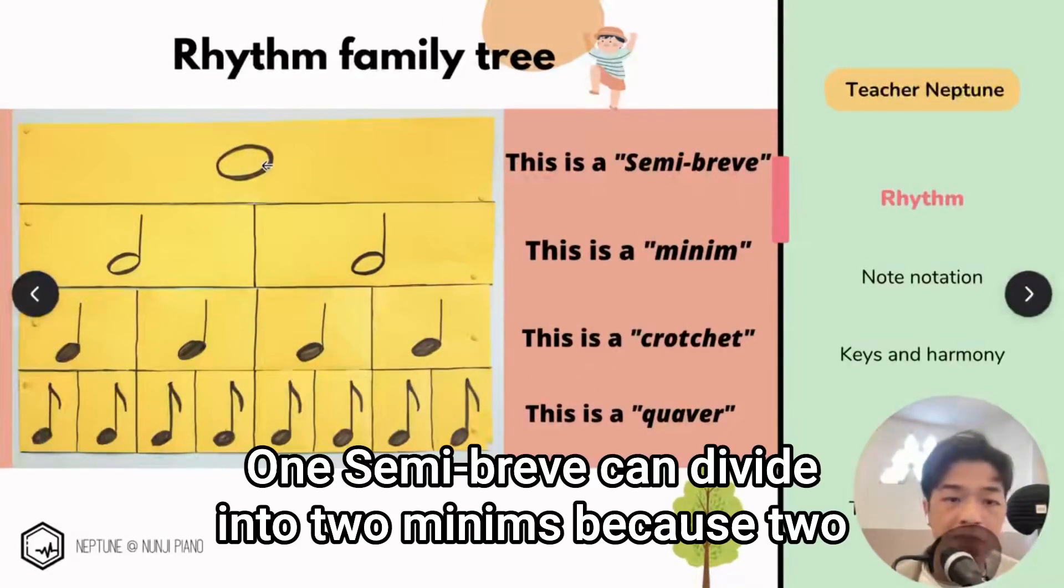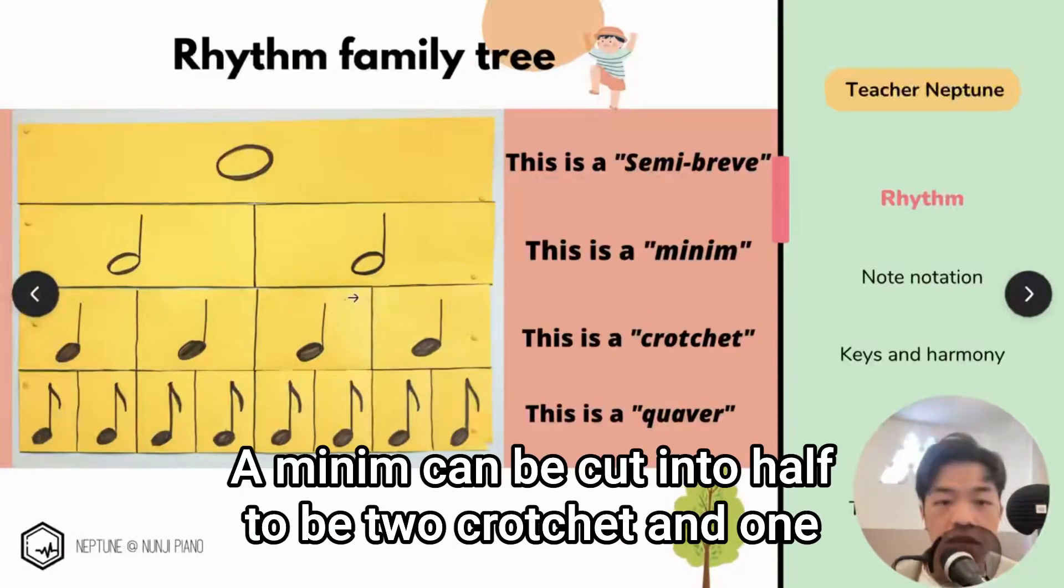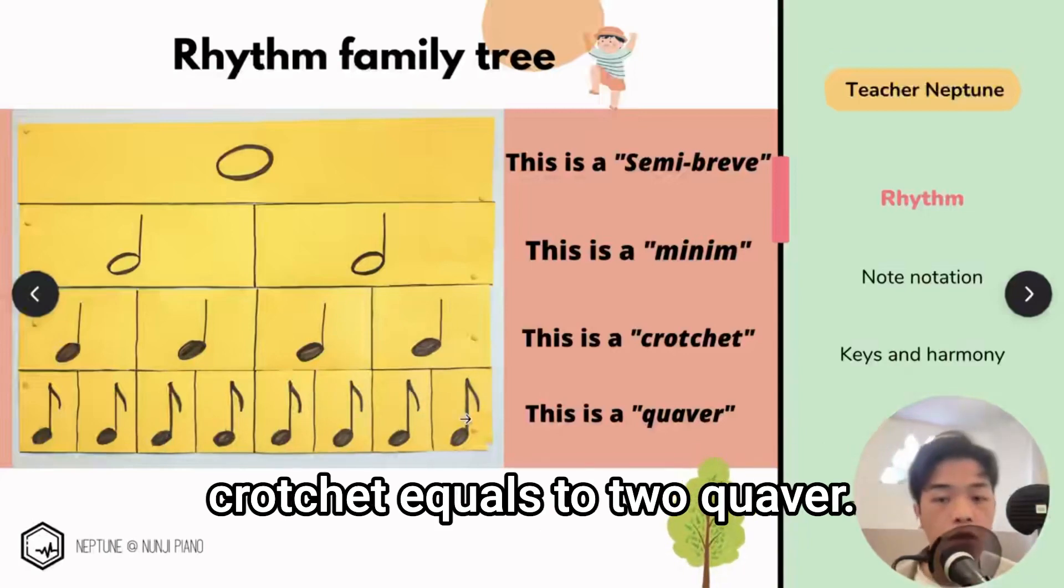So this is the rhythm family tree. One semi-quaver can divide into two minimums because two plus two equals four, right? A minimum can be cut into half to be two crotchets, and one crotchet equals to two quavers.